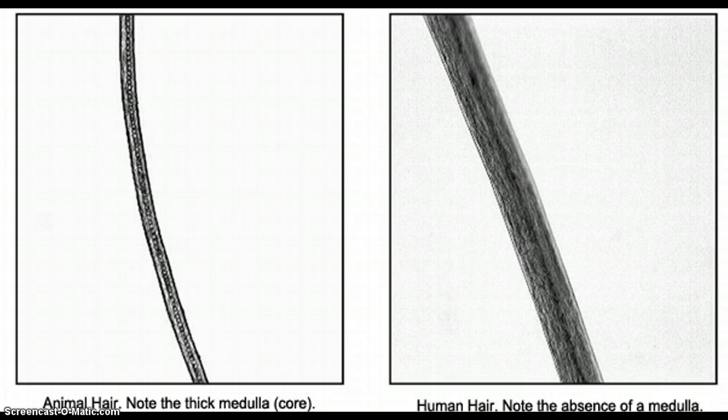And then also, animal hair, the cuticles will display wide variation in pattern. Whereas in human hair, they're typically more flat. But that needs to be observed more closely. So that's the difference between human and animal hair. The biggest thing to remember is the medullas, how animal hair will usually have a thick one, whereas human hair probably won't have one. And if they do, it'll be extremely fragmented.